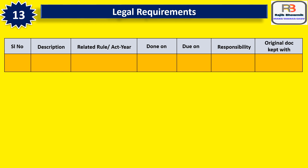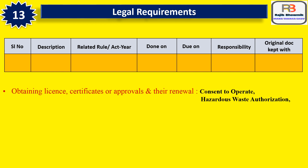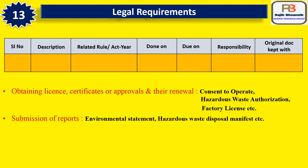In legal requirements of EHS, there are varieties like obtaining licenses, certificates or approvals and their renewal. Examples include: consent to operate, hazardous waste authorization, factory license, etc. Submission of various reports to government authorities such as environmental statement, hazardous waste disposal manifest, etc. is also required. Country to country and state to state, legal requirements vary. The EHS Department should devise a mechanism to get the latest update about new or changed legal requirements.